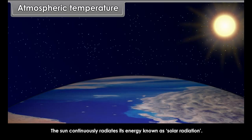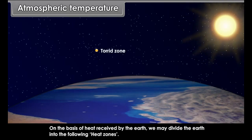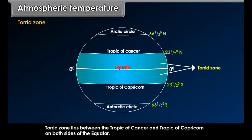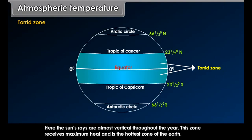Climate is the sum of all weather conditions prevailing over a large area for a long period of time. The climate of India may be described as a monsoon type of climate. The climate stands for a generalized picture of the weather conditions of a given place. Hence, the elements of weather and climate are the same. The elements of weather and climate are: temperature, pressure, wind direction, and humidity.